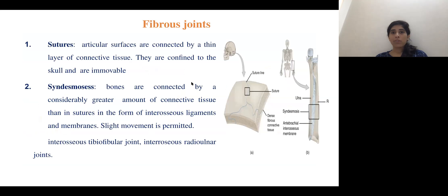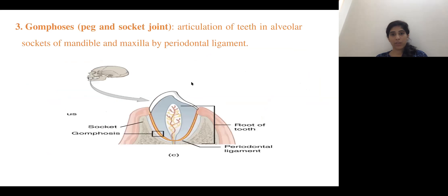In the fibrous type of joint, sutures have articulating surfaces connected by a thin layer of connective tissue. In syndesmosis, bones are connected by a considerably greater amount of connective tissue, making it a slightly movable joint. The interosseous radioulnar joint is an example of this type.